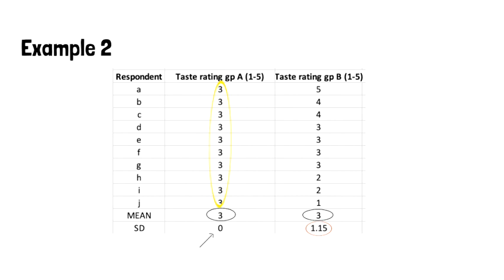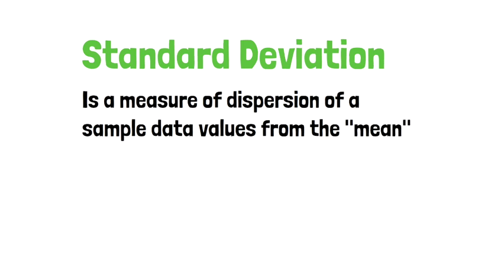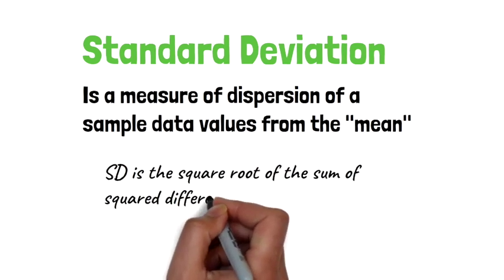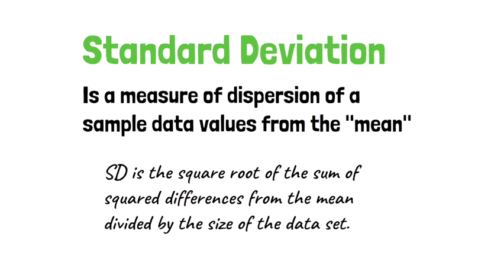Standard deviation is a measure of dispersion of sample data values from the mean. Standard deviation is the square root of the sum of squared differences from the mean divided by the size of the data set.